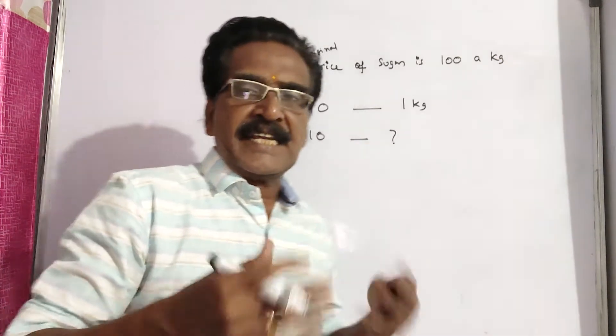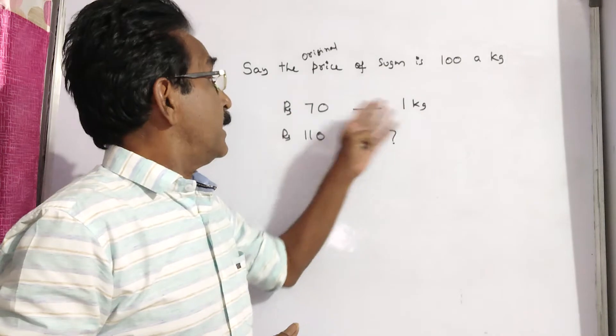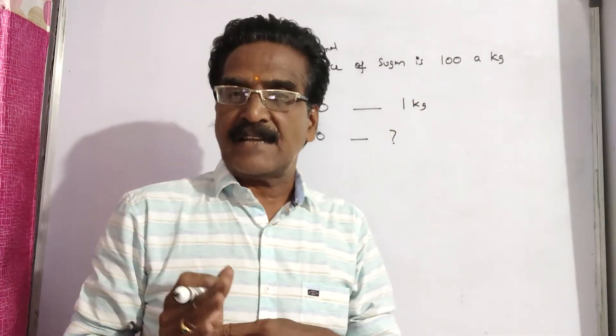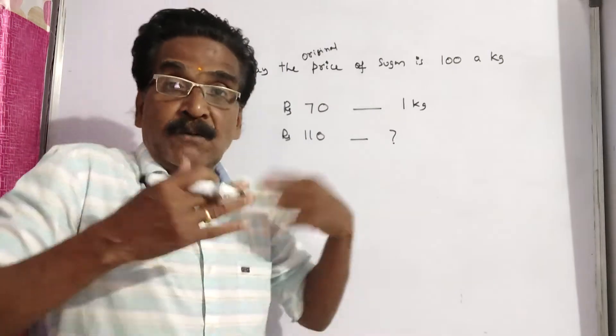Then what is the increased percent in the consumption? Earlier, he gets one kg of sugar for rupees 70. Now he wants to spend 110 rupees.